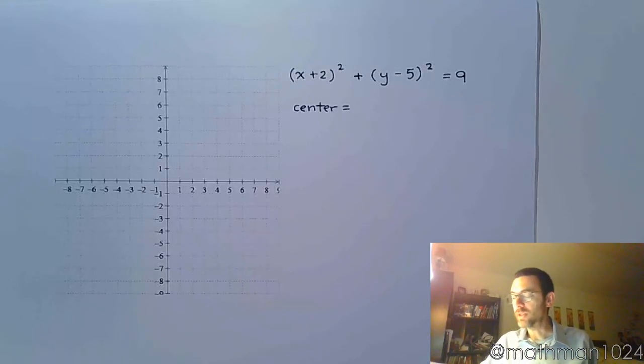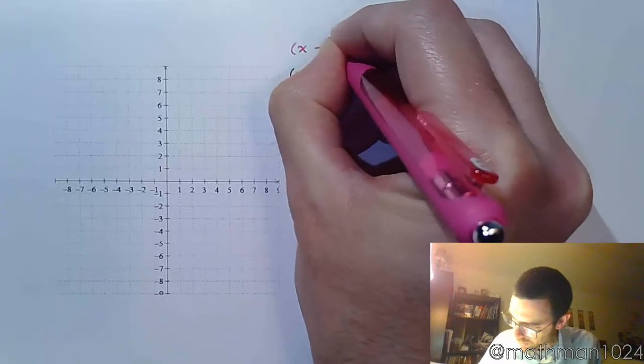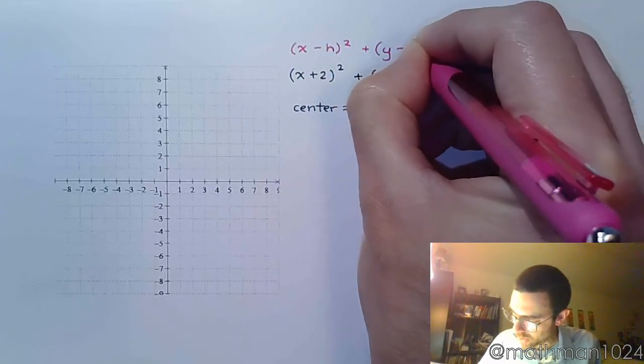Here we have a circle that is in center radius form. So remember what we said in the last video about how we identify the center. It comes from this formula, from this form right here.